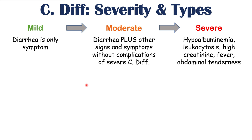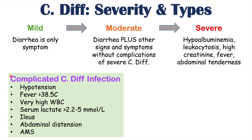Certain C. diff infections are categorized as complicated C. diff infections, which may require ICU admission. These have hypotension — even with vasopressors — fever greater than 38.5°C, very high white blood cell count, serum lactate greater than 2.2 to 5 millimol per liter, ileus, abdominal distension, and altered mental status. All of these fall under the classification of complicated C. diff infection.